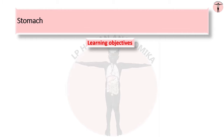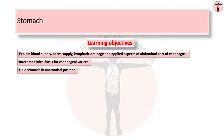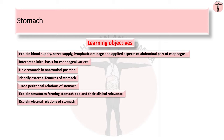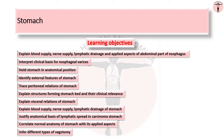The learning objectives of this session are: explain blood supply, nerve supply, lymphatic drainage, and applied aspects of the abdominal part of esophagus; interpret the clinical basis for esophageal varices; hold the stomach in anatomical position; identify external features of stomach; trace peritoneal relations of stomach; explain structures forming the stomach bed and their clinical relevance; explain visceral relations of stomach; explain blood supply, nerve supply, and lymphatic drainage of stomach; justify the anatomical basis of lymphatic spread in carcinoma stomach; correlate normal anatomy of stomach with its applied aspects; and infer different types of vagotomy.